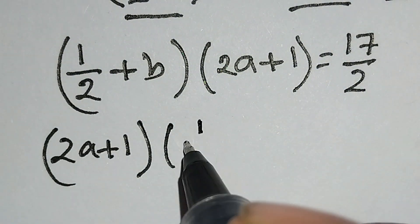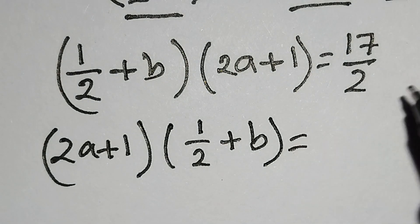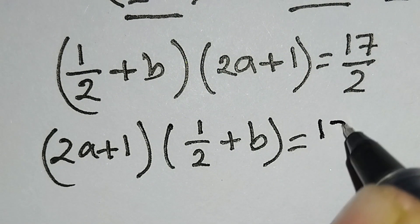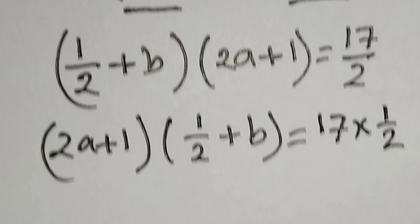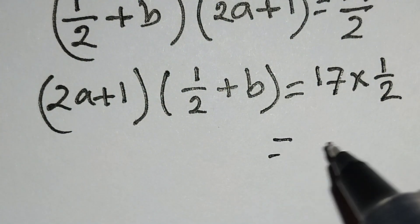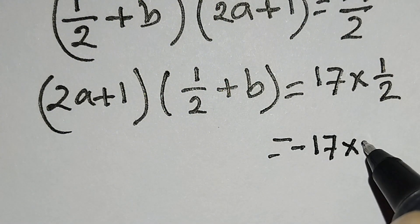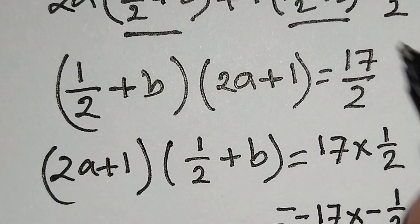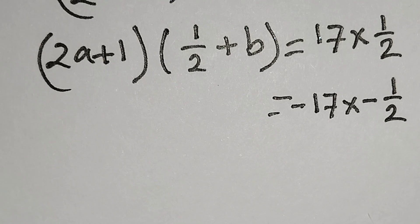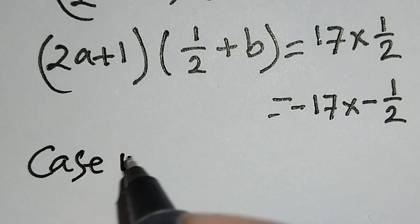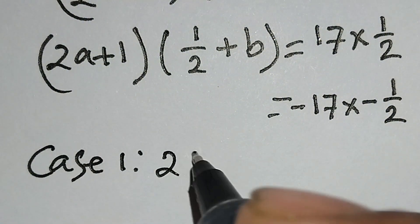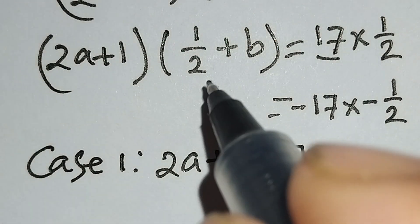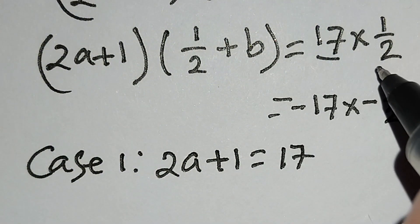Now we can write (2a + 1)(1/2 + b) = 17/2. We can express 17/2 as a product: 17 × (1/2) or (−17) × (−1/2). Case 1: 2a + 1 = 17 and 1/2 + b = 1/2.